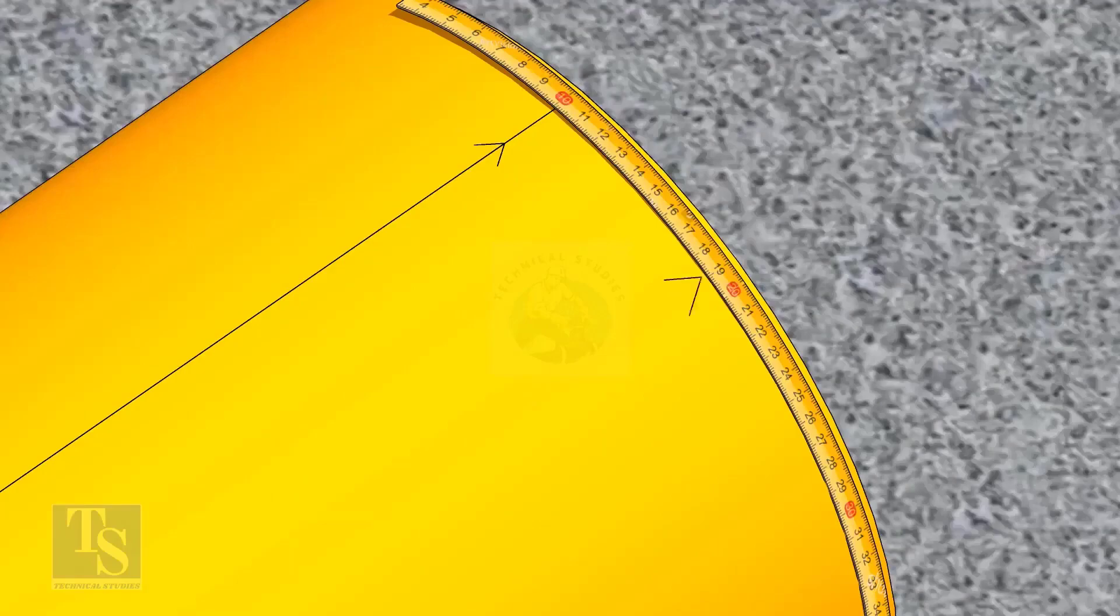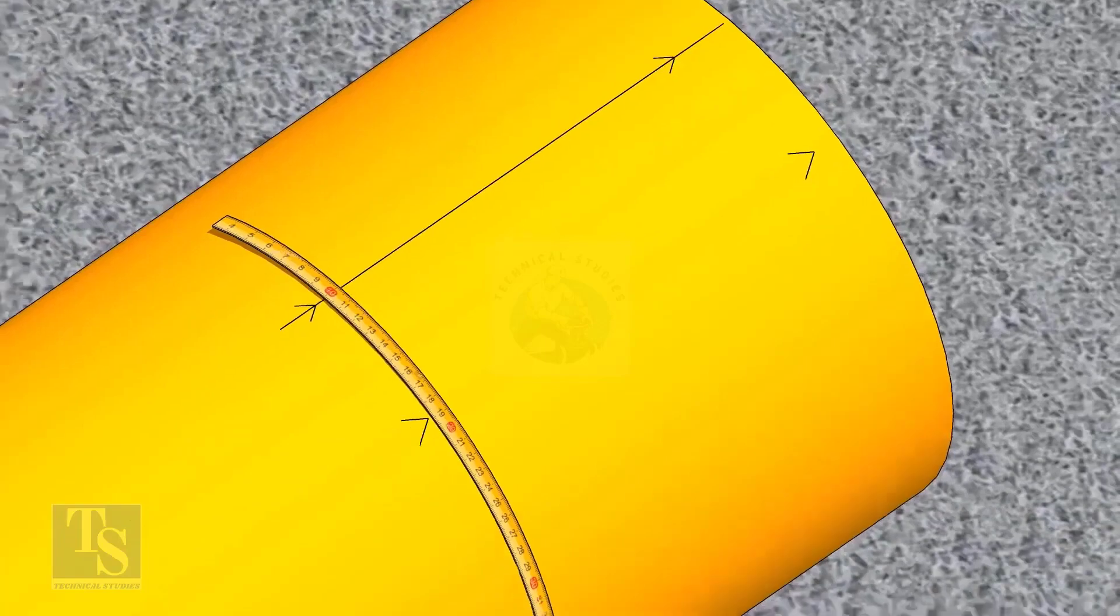Since we are rotating the flange 25 degrees anticlockwise, mark 88.5mm anticlockwise on the pipe, as shown.